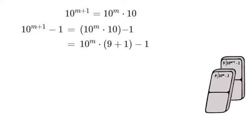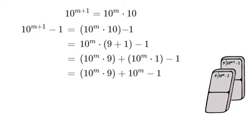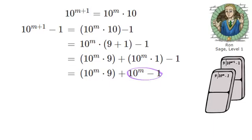We can then distribute the multiplication of 10 to the power of m into the sum of 9 and 1. 10 to the power of m times 1 is just 10 to the power of m. Now, where have we seen 10 to the power of m minus 1?